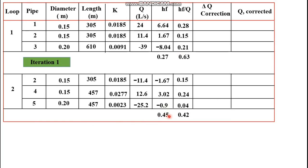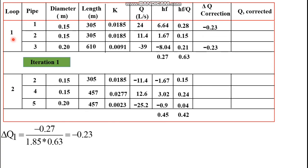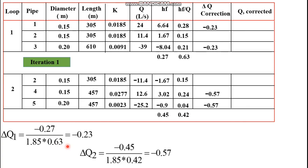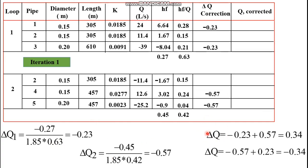Similarly, we calculate the summation of head loss and hf/Q for loop 2. Next, calculate the correction. First compute the correction for loop 1 and loop 2 for each pipe except pipe 2. The correction is minus the summation of head loss divided by 1.85 times the summation of hf/Q. For the common pipe 2, the correction for loop 1 is delta Q₁ minus delta Q₂, and for loop 2 it is delta Q₂ minus delta Q₁.